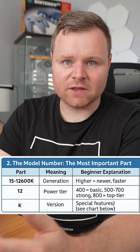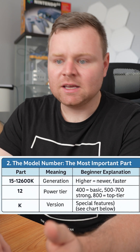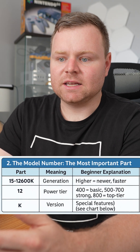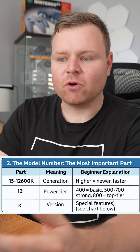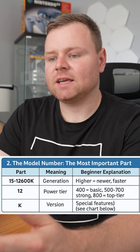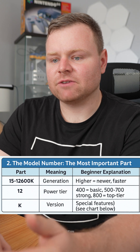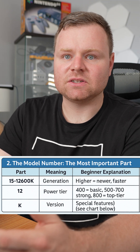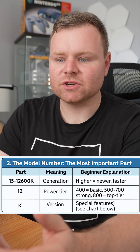To break that down: the 12 means it's the 12th generation, which is the year it was released. The 600 means it's its performance ranking within that generation, and the K is a special version.